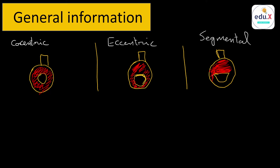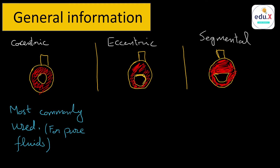The concentric orifice plate is the most commonly used type. It is used for pure fluids like pure water or air streams in which there are no entrained gaseous particles when liquid is flowing, or no entrained liquid particles when gas is flowing through the pipe.